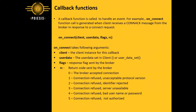OnConnect takes the following arguments: client — the client instance for this callback; user data — the user data set in the client method call or user data set function; flags — response flags sent by the broker; and return code — the return code sent by the broker.